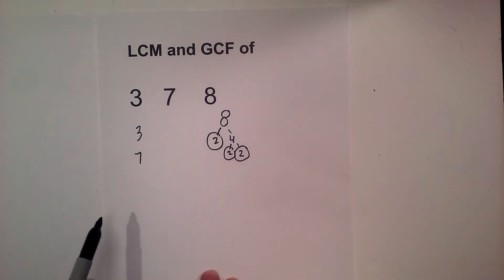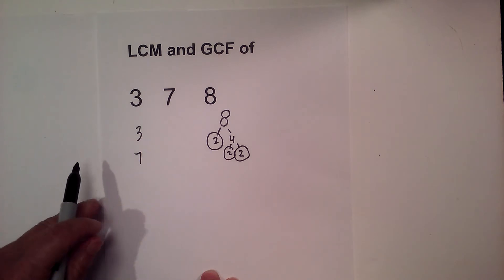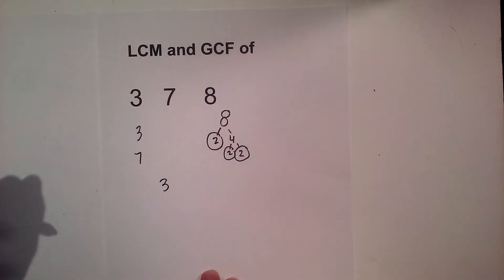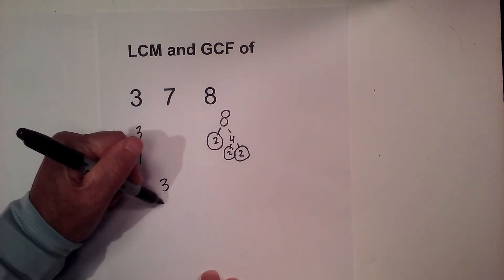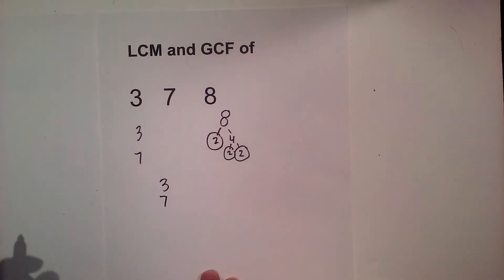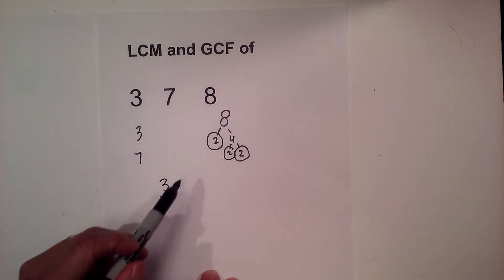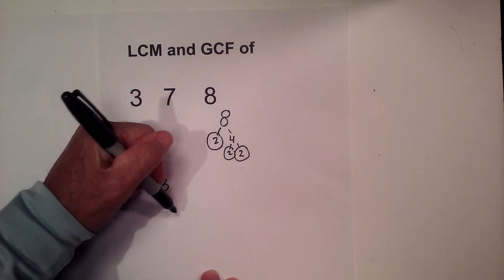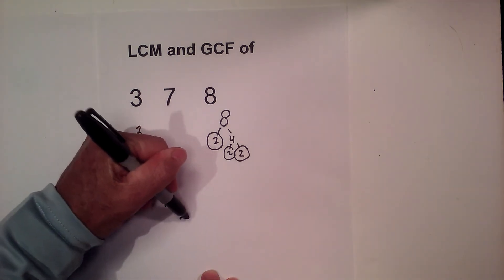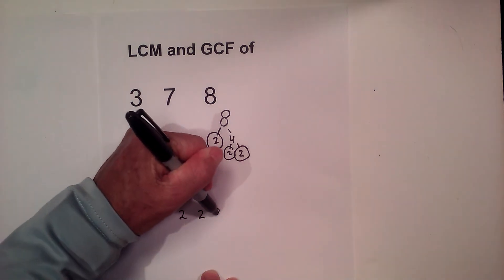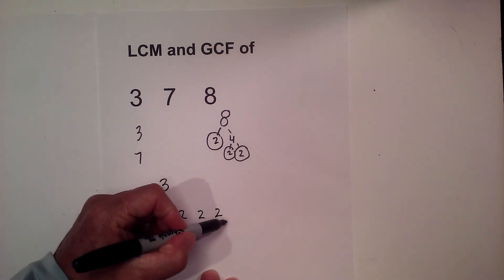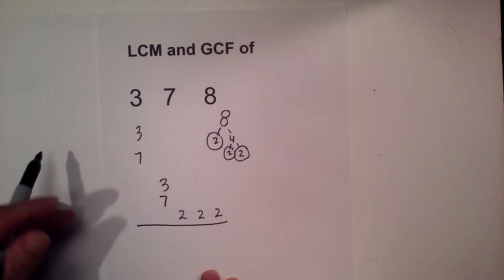Now I'm going to create a factor chart. I'll write all the factors of three, which is just three, then all the factors for seven, which is just seven. For eight, I don't have a three or seven, so I'm going to write two, two, and two.